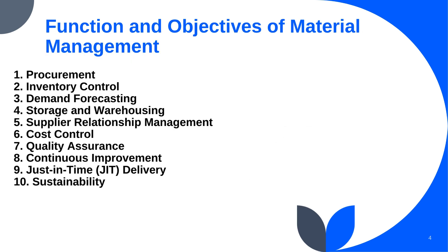The functions and objectives of material management include: procurement, inventory control, demand forecasting, storage and warehousing, supply relationship management (SRM), cost control, quality assurance, continuous improvement — also known as the Kaizen 5S model — just-in-time delivery, and sustainability. These are the top 10 functions and objectives of material management.